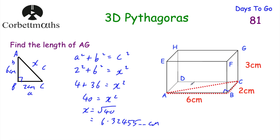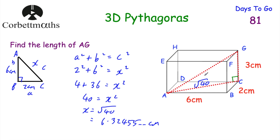The length of AC is equal to 6.32455... centimetres. Because we're going to use Pythagoras' theorem again, it can actually be useful in these questions to leave it as the square root of 40. Now going back to triangle ACG — it's a right angle triangle and we have the length of AC which is root 40, and the length of CG which is 3 centimetres, so we can find the hypotenuse AG.